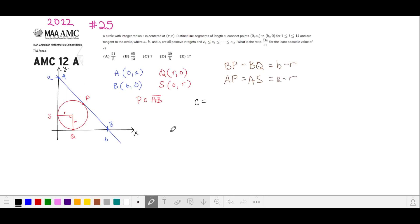The distance from A to S is just the difference in the Y coordinates. C is the length of our tangent segment AB. So we can add these distances together. So C is A plus B minus 2R.